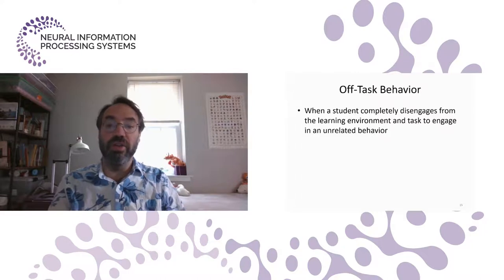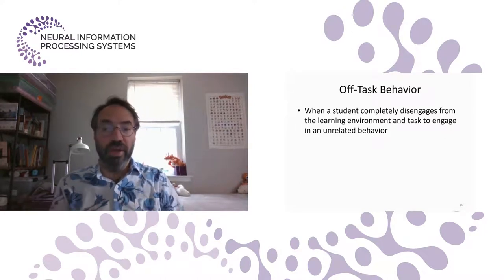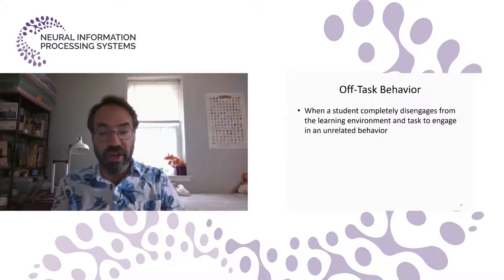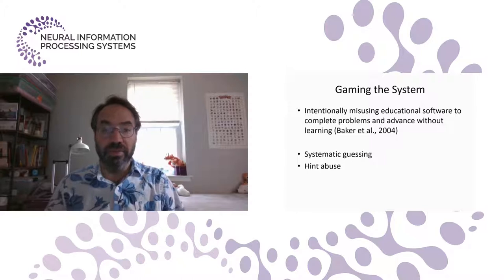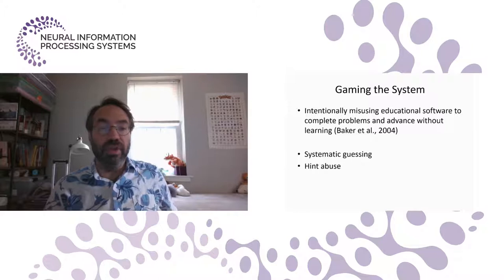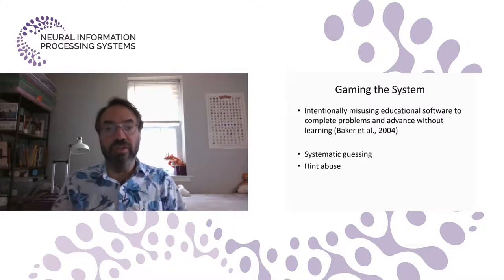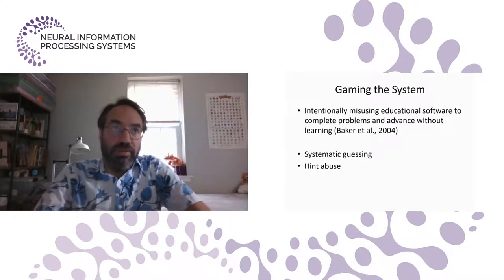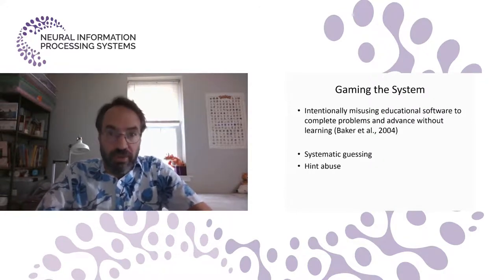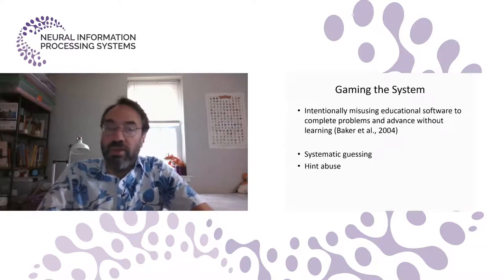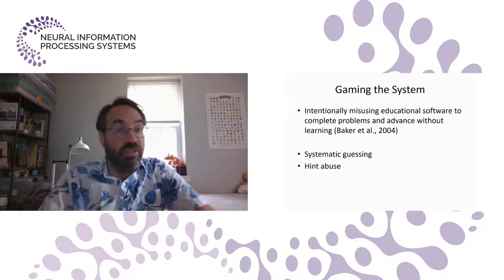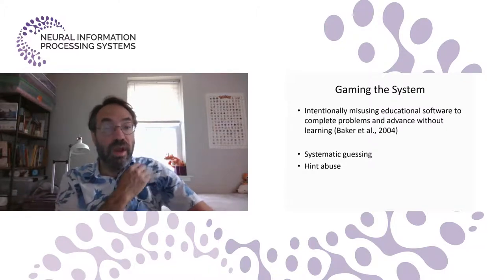The primary constructs that we model include off-task behavior. When a student completely disengages from the learning environment and the task to engage in an unrelated behavior. Gaming the system. Intentionally misusing educational software to complete problems and advance without learning. That can include behaviors like systematic guessing. For example, one time when I was out in the classroom, I saw a student type 1 and it was wrong. They typed 2 and it was wrong. They typed 3, wrong, 4, wrong, 5, wrong, 6, wrong. All the way to 38, which was finally the correct answer and the system let them move on.